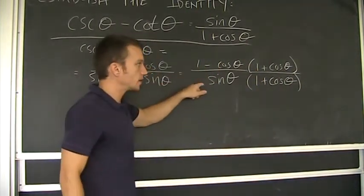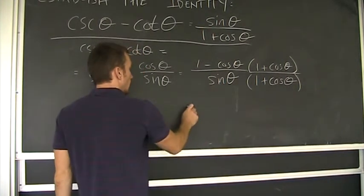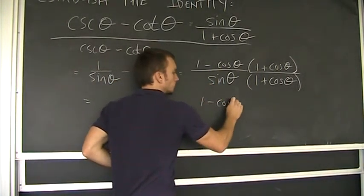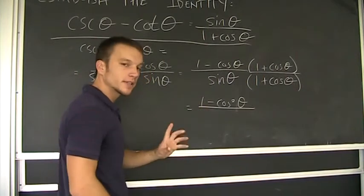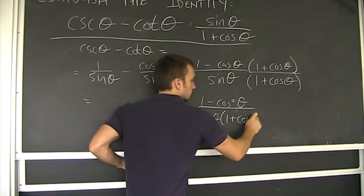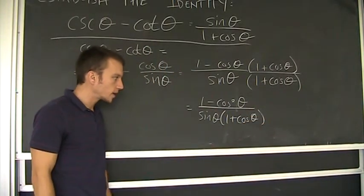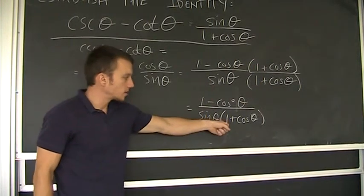So multiply the numerator and the denominator by that. See what you get. Alright? So let's see what happens. The top will be one minus cosine squared theta. And then on the bottom, well, I'm just going to leave it. I'm not going to multiply it through. See why? Alright? I'm not going to multiply that sine theta through because I can see that I want this as part of my answer.